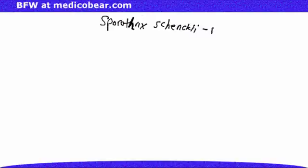Sporothrix schenckii is a fungus found worldwide, all over the environment, present in soil as well as on living and decomposing plant material.